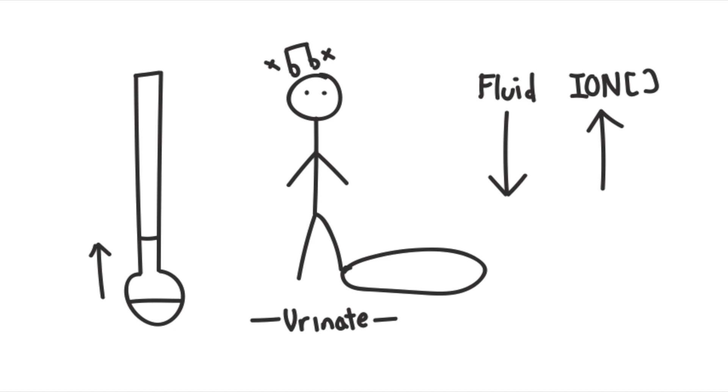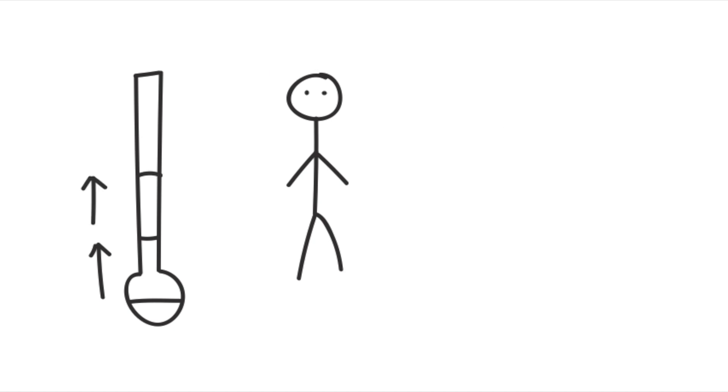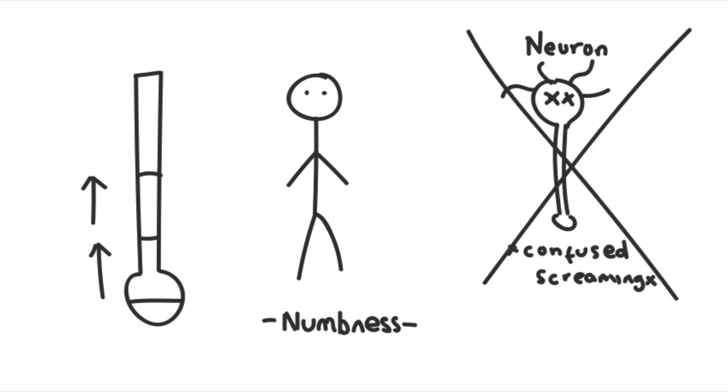When things start to get really cold, you start to go numb. This is not a result of the sensory cells getting overloaded and not being able to handle the cold anymore. Rather, blood will stop traveling to your extremities and instead concentrate around your vital organs to try to keep them warm.